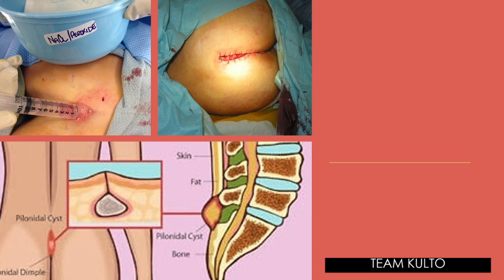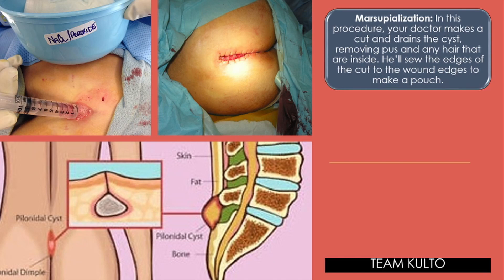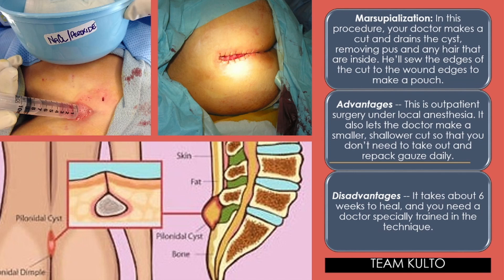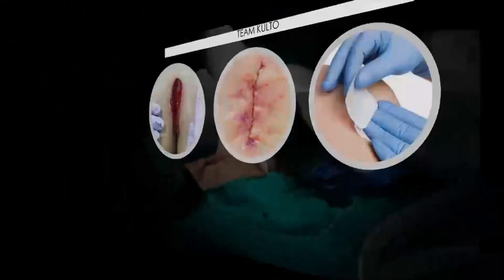Another surgical treatment is marsupialization. In this procedure your doctor makes a cut and drains the cyst, removing pus and any hair inside. The doctor will sew the edges of the cut to the wound edges to make a pouch. The advantage is this is outpatient surgery under local anesthesia, same as incision and drainage. It also lets the doctor make a smaller or shallower cut so that the patient does not need to remove and repack gauze daily. The disadvantage is it takes six weeks to heal and requires a doctor specially trained in the technique.